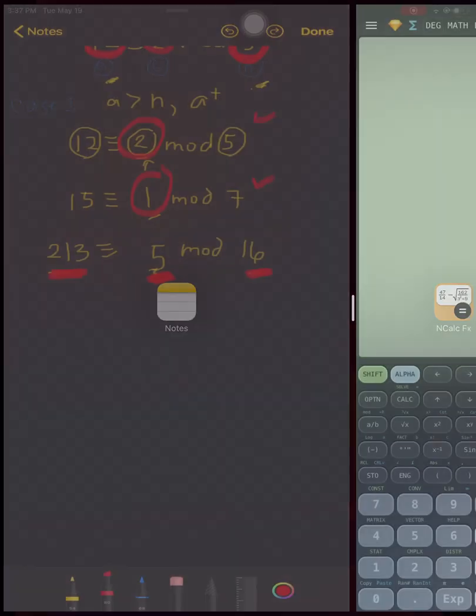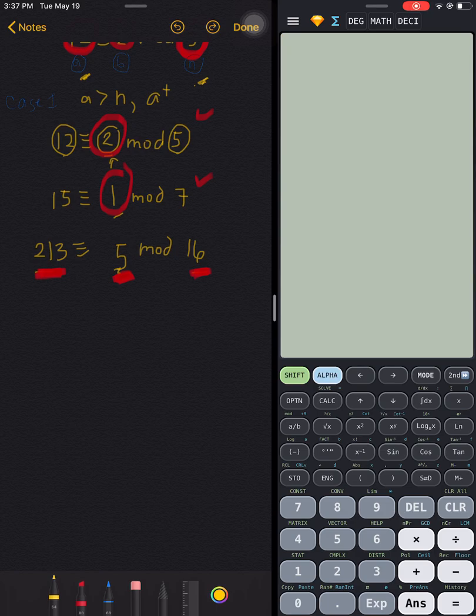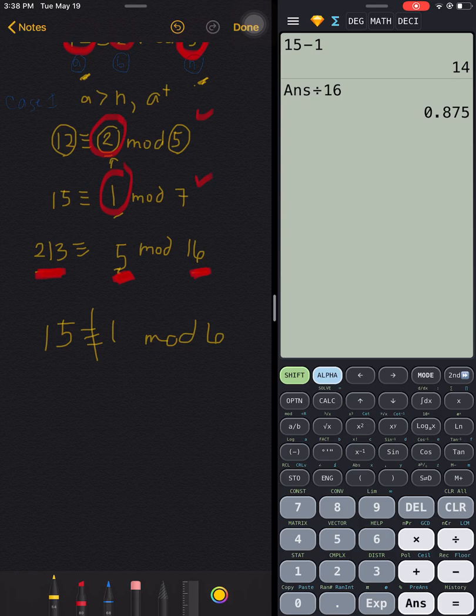If you have something like, if you will just be guessing—if you have 15 is congruent to 1 modulo 6—you would know that they should really not be congruent, because when you do 15 minus 1, the answer is 14, and when you divide that by 16, the answer is decimal, so it has a remainder. So it does not abide with the definition of modular arithmetic.